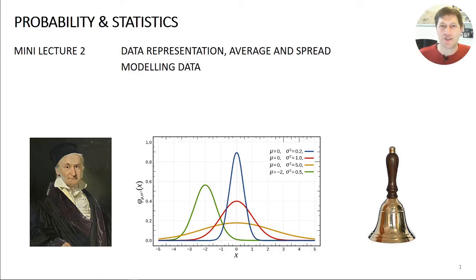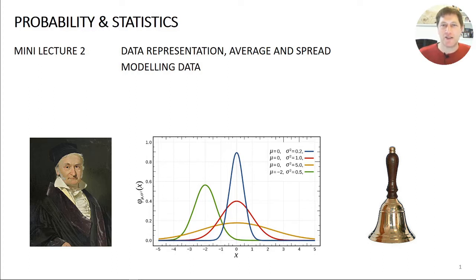Welcome to Mini Lecture 2 for Probability and Statistics. The last Mini Lecture looked at our process for collecting some data and some initial ways of representing the characteristics of that data with median values, interquartile range and so on. But we know that there's a population that we want to be representing from the sample that we've measured, and one way of doing that is to make some assumptions about the nature of that population and then apply a model to our measured data to try and get an estimate for what the population is.